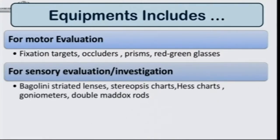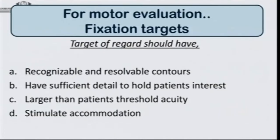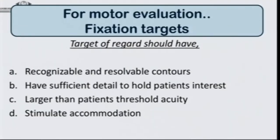The stereopsis charts, the HES charts, the goniometers, etc., and those required for surgery — we will cover each of these in detail. Let's look at the first thing: fixation targets. For any squint evaluation, the first and foremost thing that we would need is a fixation target.